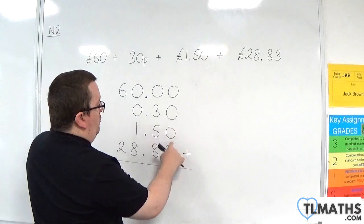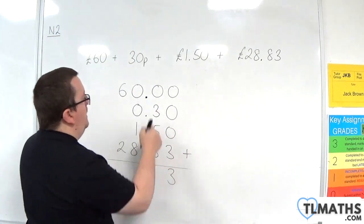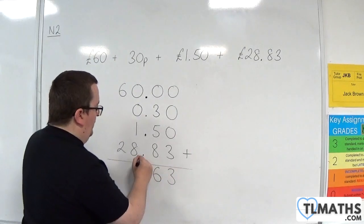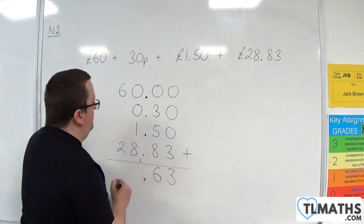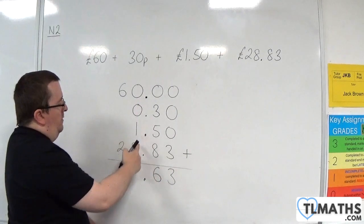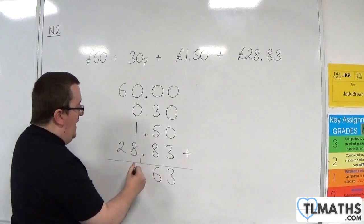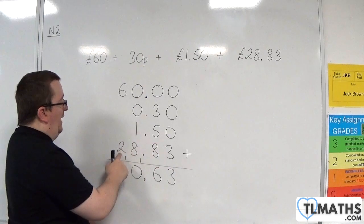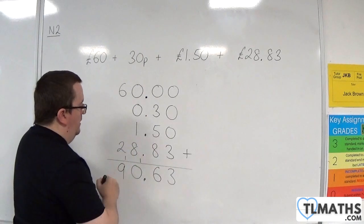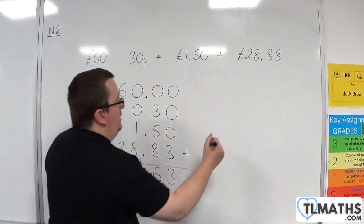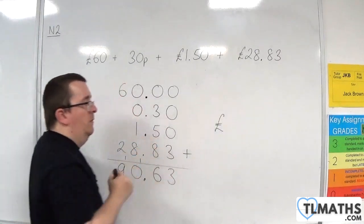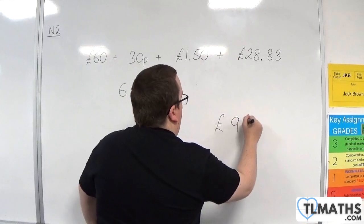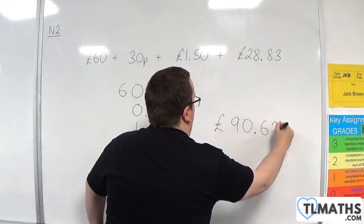So 0 plus 0 plus 0 plus 0 plus 3 is 3. Then we've got 3, 8, 16 — so put 6, carry the 1. Bring the decimal point down. Then we've got 1 plus 8 is 9, plus 1 is 10 — put 0, carry the 1. Then 6 plus 2 is 8, plus 1 is 9. So the total — make sure you've got the pound sterling sign — is £90.63.